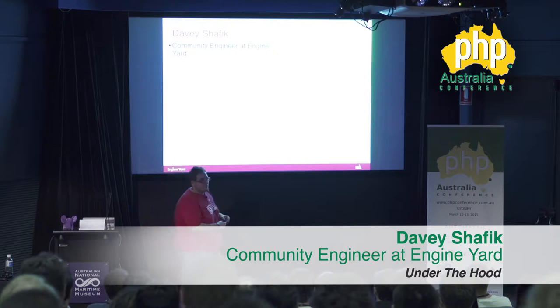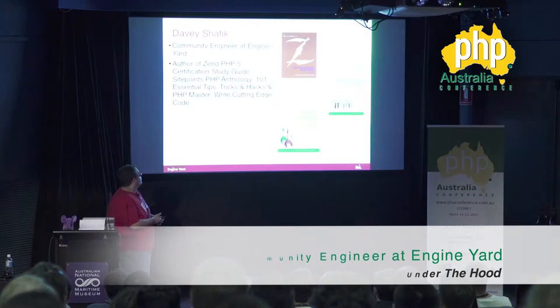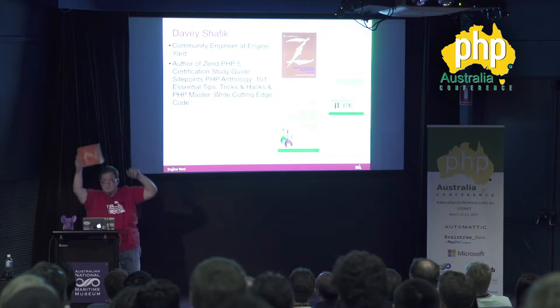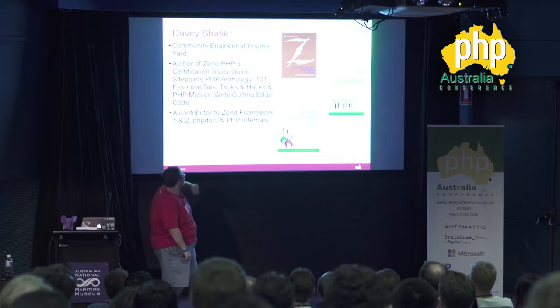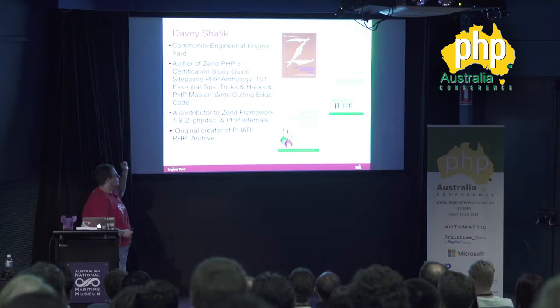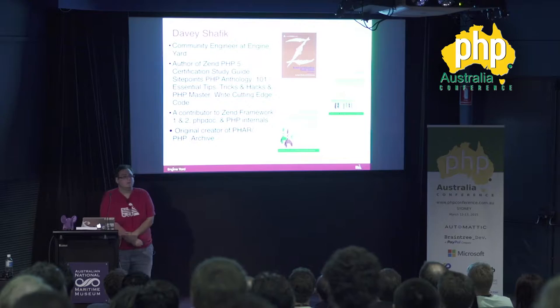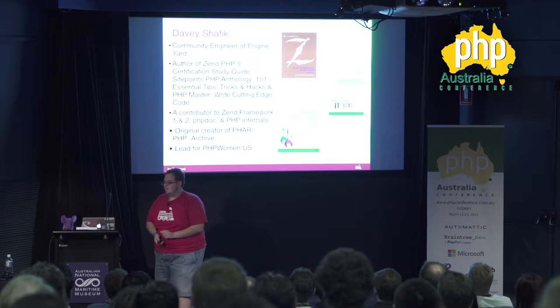I am a community engineer at Engine Yard. Engine Yard is a platform as a service — we take your PHP applications and scale them in the cloud. I'm the author of the Zend PHP 5 Certification Study Guide. I'm a contributor to Zend Framework 1 and 2, PHP Docs, and I have one patch in internals. Also the original creator of PHAR, or PHP Archive — I wrote it in PHP and somebody much smarter wrote it in C and it got into PHP. I'm the lead for PHP Women in the US, and I'm at D Shafik on Twitter.